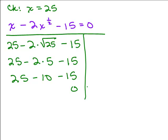Minus 15. So I have 25 minus 10 and then minus 15, and yep, that's 0. So this was the correct solution. So our answer is 25. So that's how we can solve this by recognizing that it's quadratic in form.